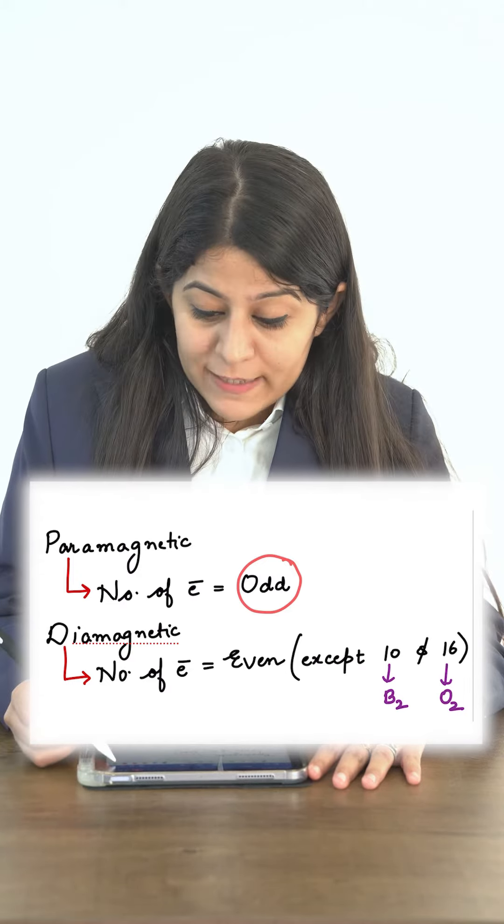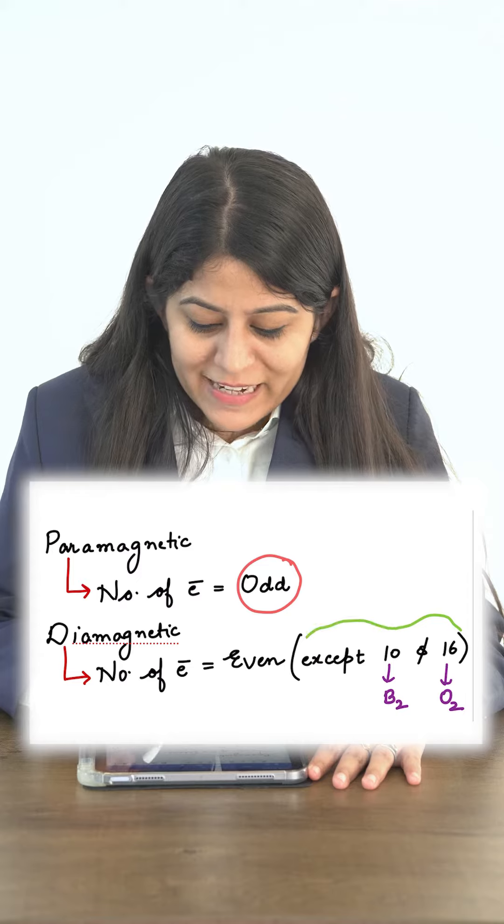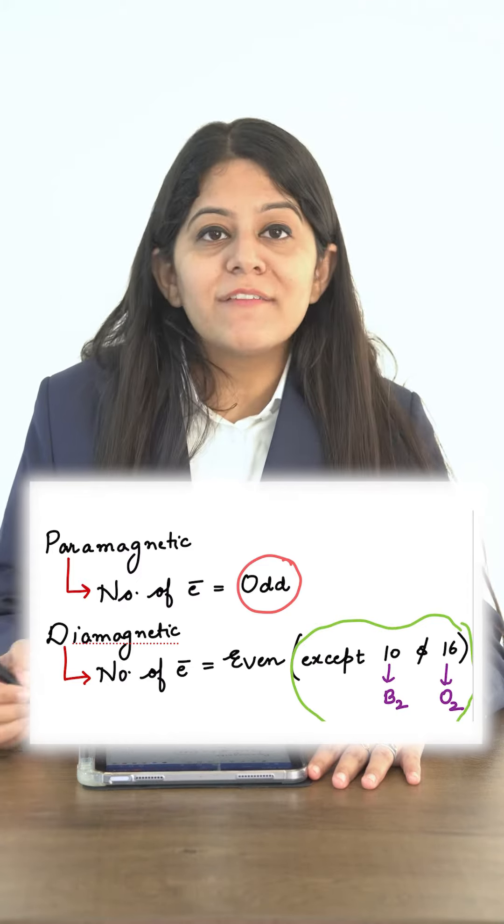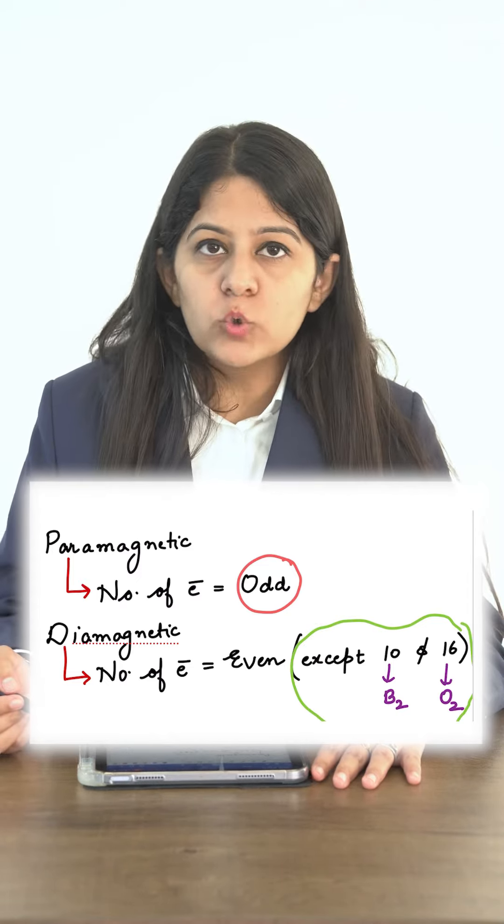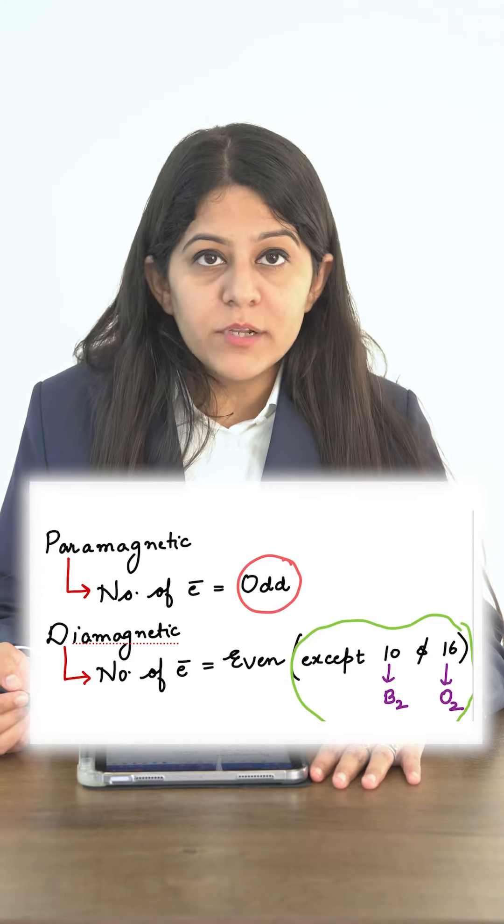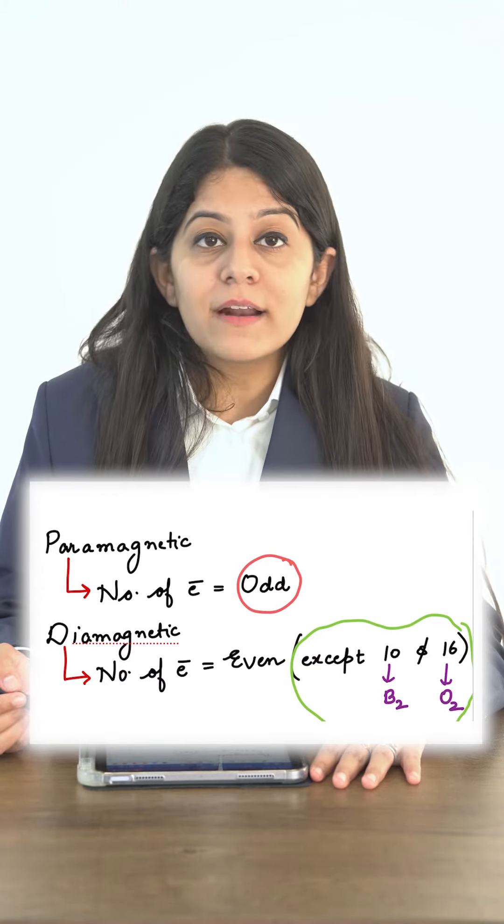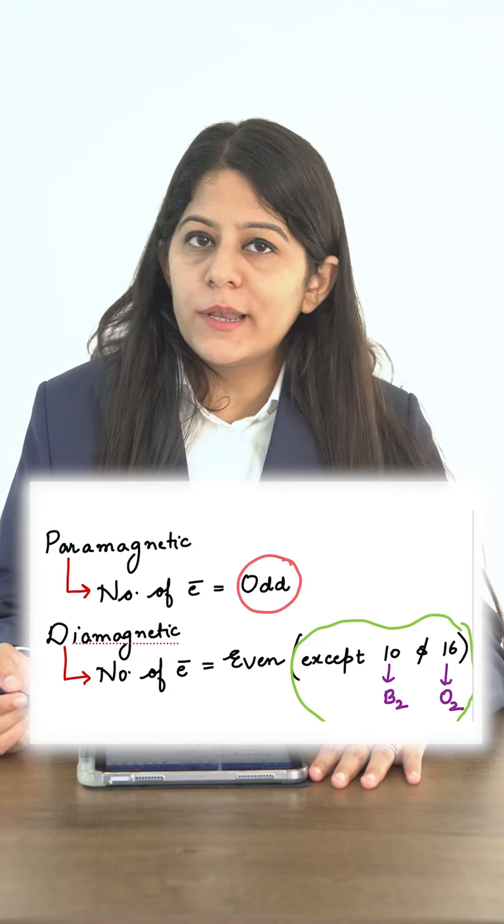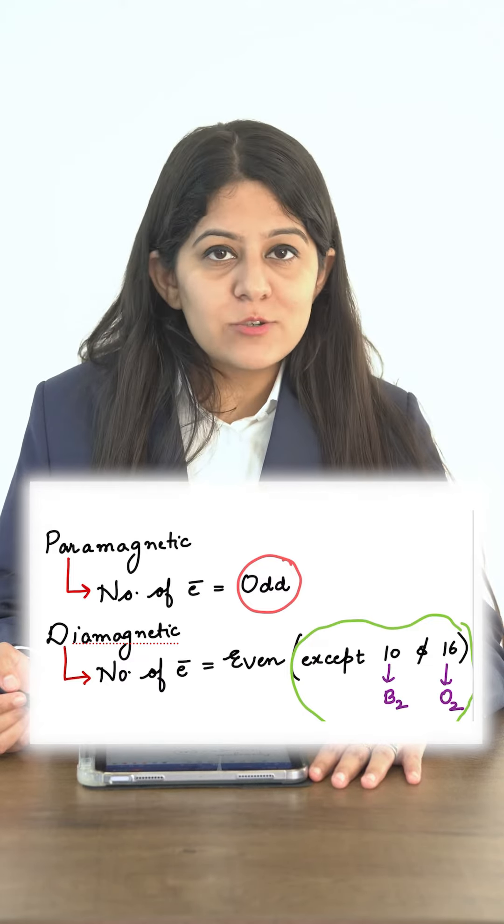But remember there are two exceptions. Exceptions are 10 and 16. B2 is having 10 electrons, whereas O2, 16 electrons. Both these species, although having even number of electrons, they are paramagnetic in nature as per the molecular orbital theory. So remember these two exceptions.